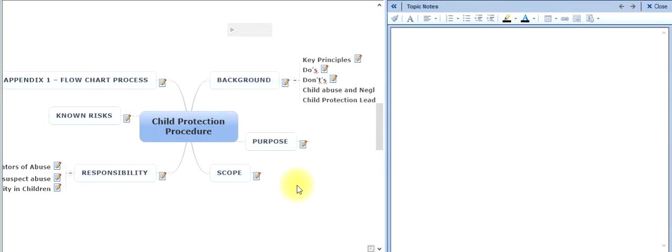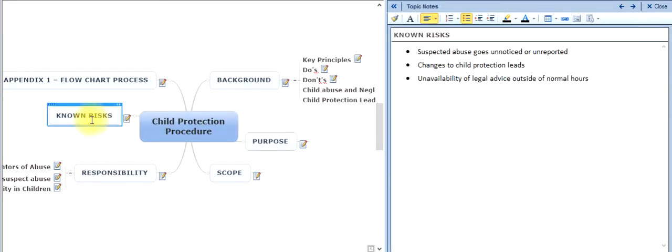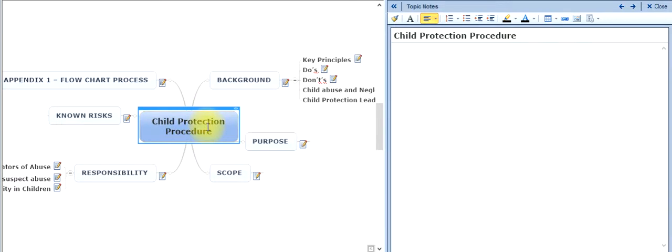Welcome to this particular SOP. This one is with particular reference to the child protection procedure. As the name suggests, it's actually a process that is required in order to help identify potentially vulnerable children who have potentially been abused, and what action to take as a result of this.